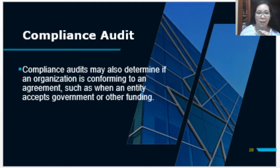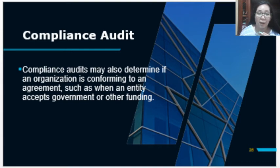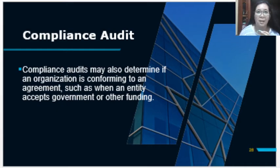This audit will also determine if the organization is conforming to their agreements, such as when the entity accepts government or other funding. In the case of grants or government subsidies, there are certain guidelines and rules or procedures that the entity should follow on how they will use the fund and for what purpose. If they use the fund in a different priority or not in accordance with what is required, they can be sanctioned and will have to repay what has been given to them because the purpose was not fulfilled based on the contract.